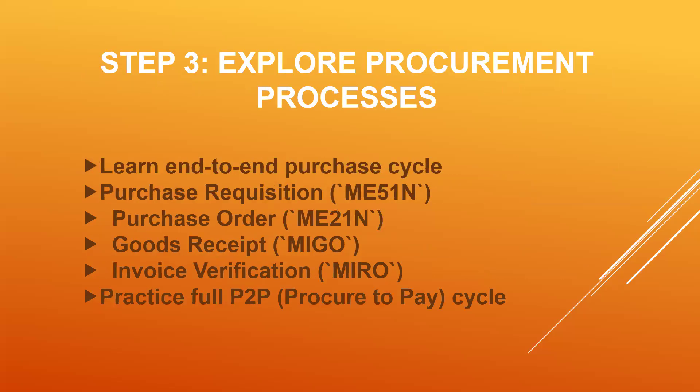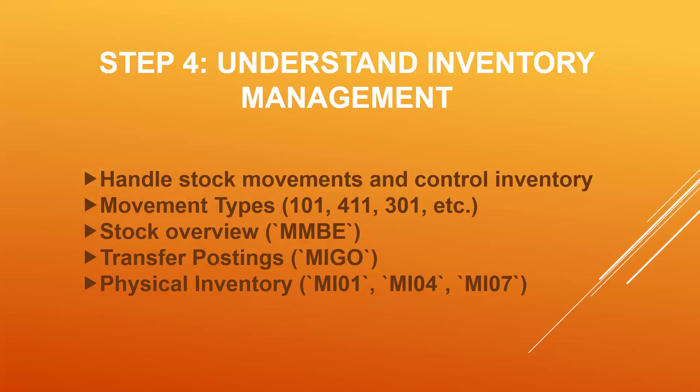Step three: explore procurement. Learn the end-to-end process — the purchase cycle, standard procurement process: purchase requisition, purchase order, goods receipt, and invoice. Practice the order-to-pay cycles. Get yourself trained in purchase order, vendor consignment, subcontracting process — all those business processes. Explore the process thoroughly.